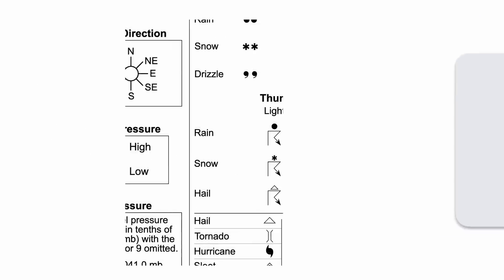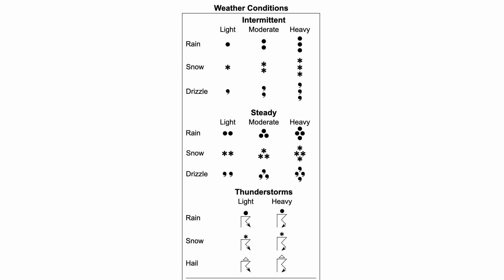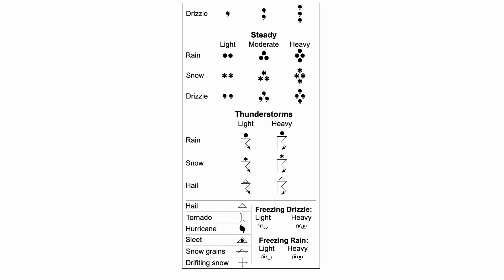In the middle of the reference table, we have all the weather condition symbols. You'll see symbols for different types of precipitation — rain, snow, drizzle — as well as the amount and frequency: heavy, moderate, or light, and whether it's steady or intermittent. At the bottom are different types of thunderstorms — thunder rain, thunder snow, thunder hail, etc. — as well as more unique situations like hail, tornadoes, hurricanes, and sleet. It's all straightforward and handy to have on the sheet.